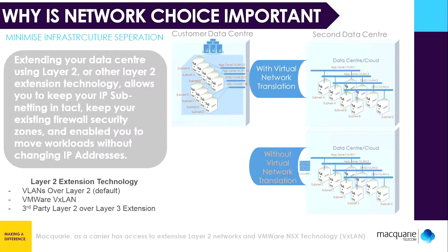Macquarie has the unique ability to make these layer 2 dreams come true in many different scenarios. Firstly, we're a carrier and we have access to our own fiber and our partner fibers in pretty much every location through 36 different carriers. Secondly, we deploy the very latest VMware technology that actually allows us to bring this layer 2 network over non-compatible WAN or ethernet networks. So with Macquarie, we can actually solve this data center extension solution in more ways than anyone else. And it's this layer 2 over layer 3 that I want to explore some more.